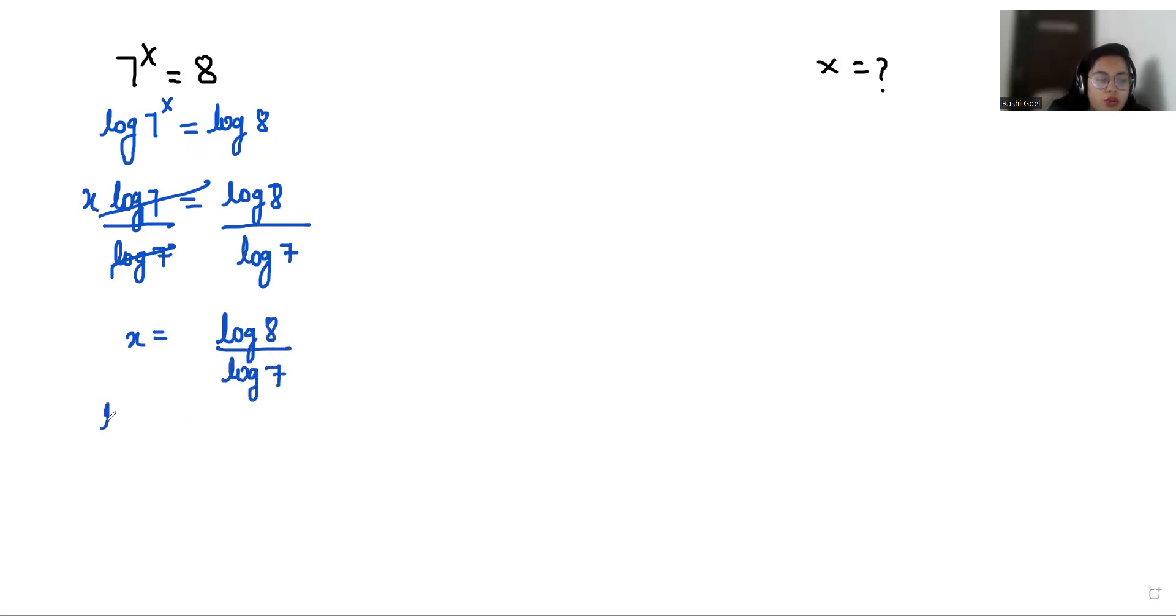So according to log rule log a by log b, we can write this as log a with base b. So the value of x is log 8 with base 7.